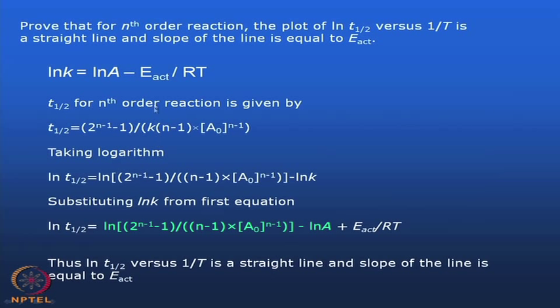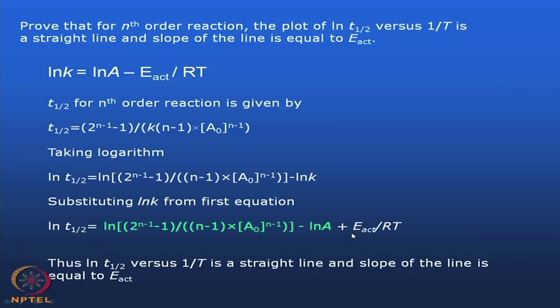For a typical nth order reaction where n ≠ 1, you can prove that ln(t½) versus 1/T will give you the activation energy. It is a straight line because ln(t½) = constant + Ea/RT, confirming that the plot of t½ versus 1/T is indeed a straight line.